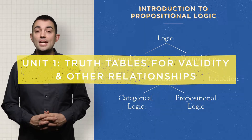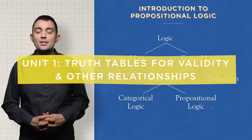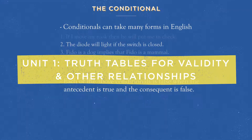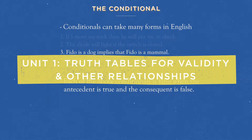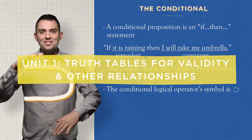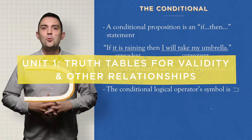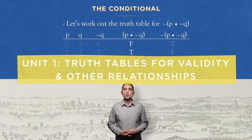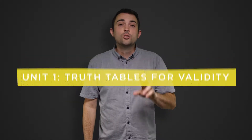For Intermediate Logic, Unit 1 covers truth tables for validity and other relationships. That's the way, for example, that you track how the truth value of a specific statement or proposition affects the truth value of an entire argument. So that's Unit 1.